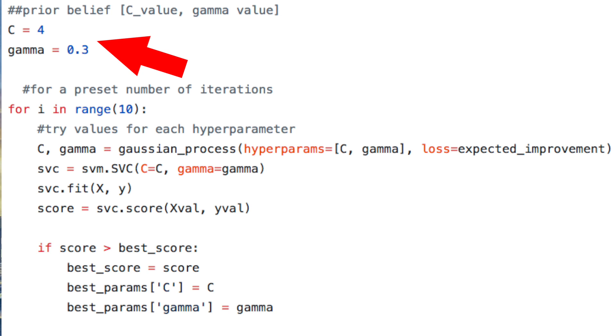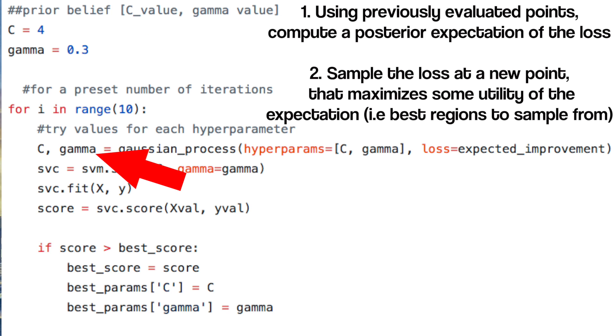Bayesian optimization uses previously evaluated points to compute a posterior expectation of what the loss f looks like. Then, it samples a loss at a new point that maximizes some utility of the expectation of f. That utility tells us which regions of the domain of f are best to sample from. This two-step process is repeated until convergence.